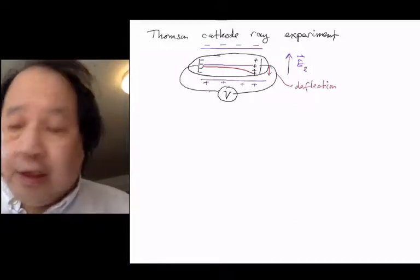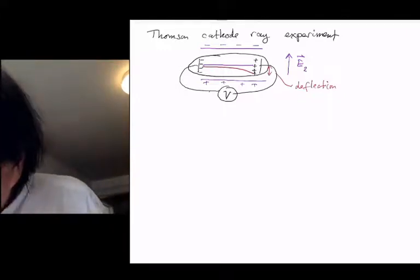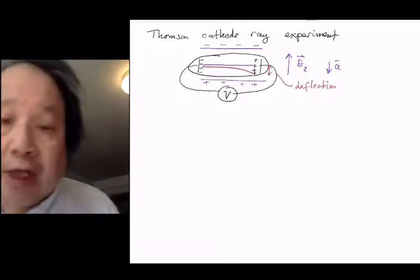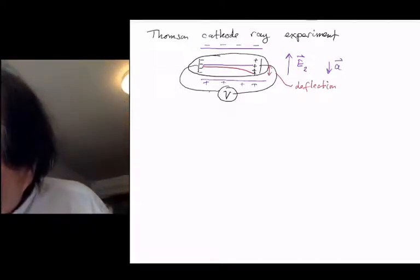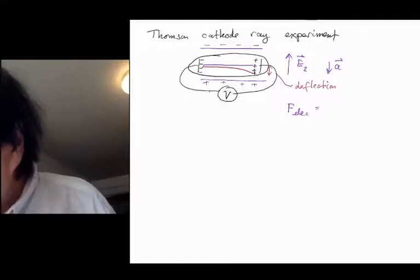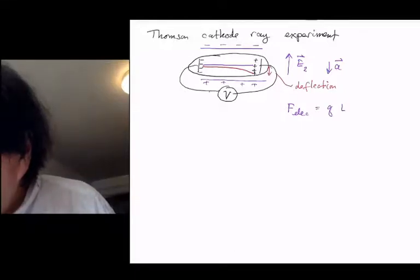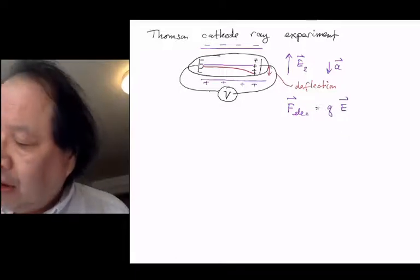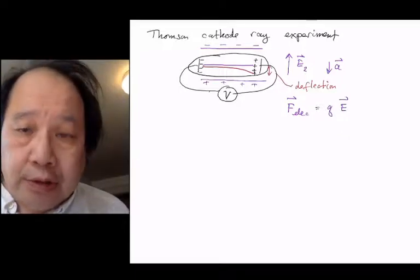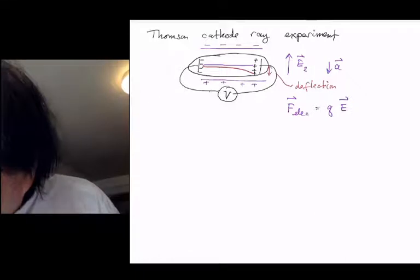So if it's deflecting downwards, that means the acceleration of the particles from the second plates is downwards. Force electric is q times e, and if the electric field and the acceleration are in opposite directions, we also know that force is equal to ma.